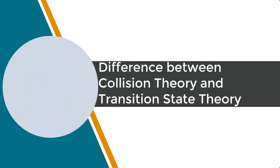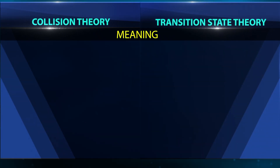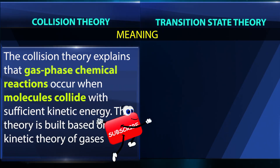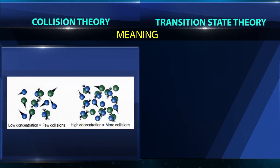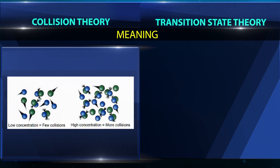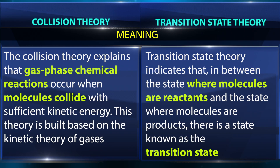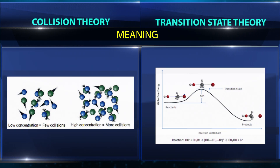The difference between collision theory and transition state theory: Collision theory explains that gas phase chemical reactions occur when molecules collide with sufficient kinetic energy. This theory is built based on the kinetic theory of gases. Transition state theory indicates that between the state of reactants and the state of products, there is an intermediate state.